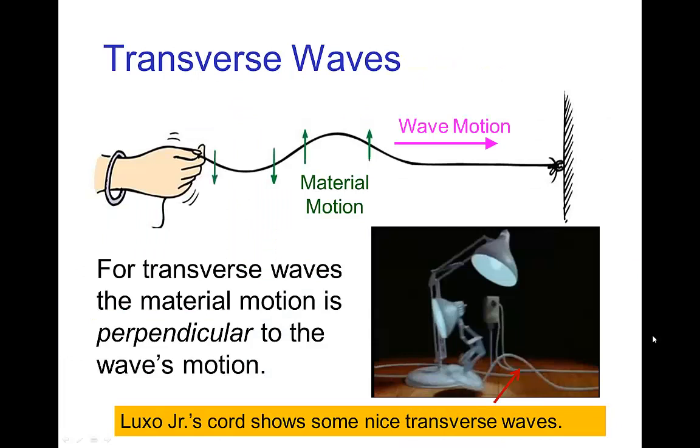Now there's two basic types of waves. The first type is a transverse wave. In a transverse wave, you have the motion of material and that is perpendicular to the motion of the waves. Ocean waves, water waves are an example of transverse waves.